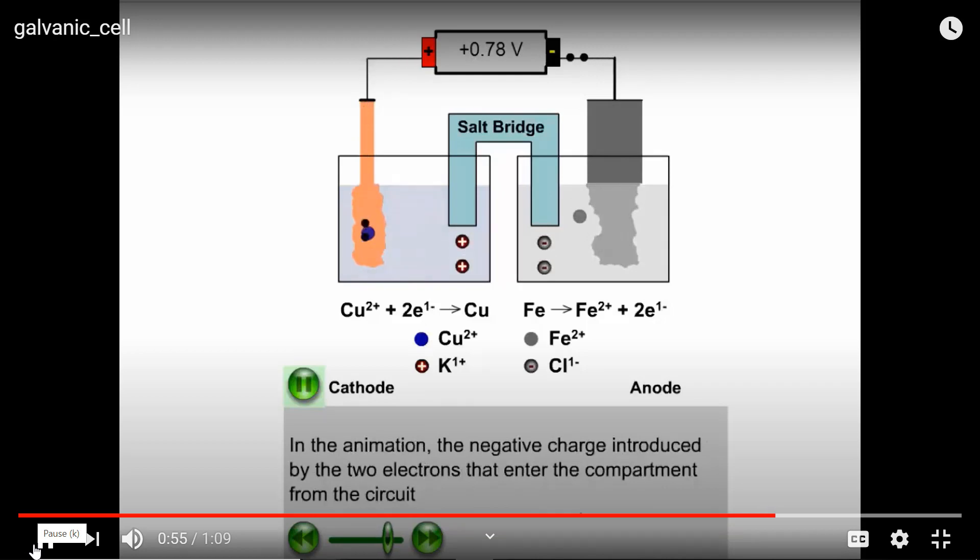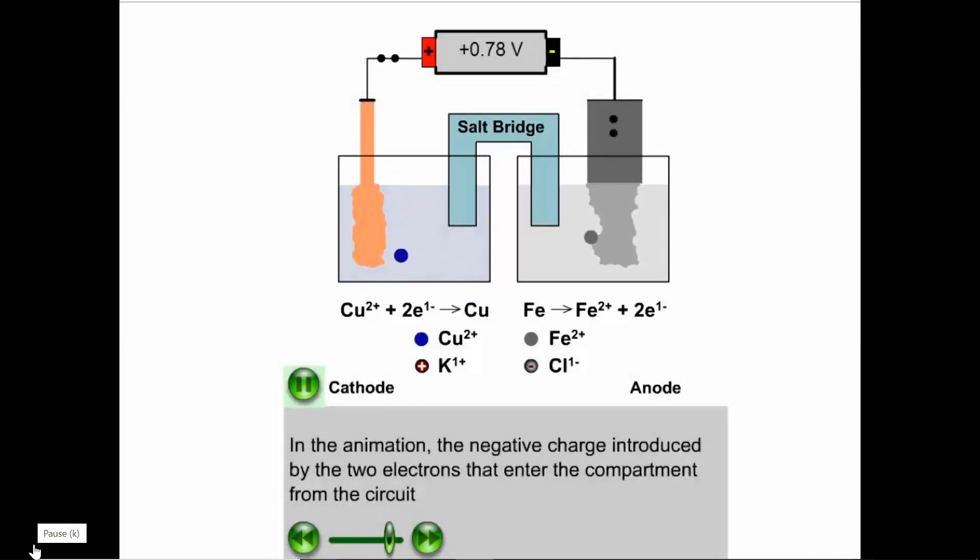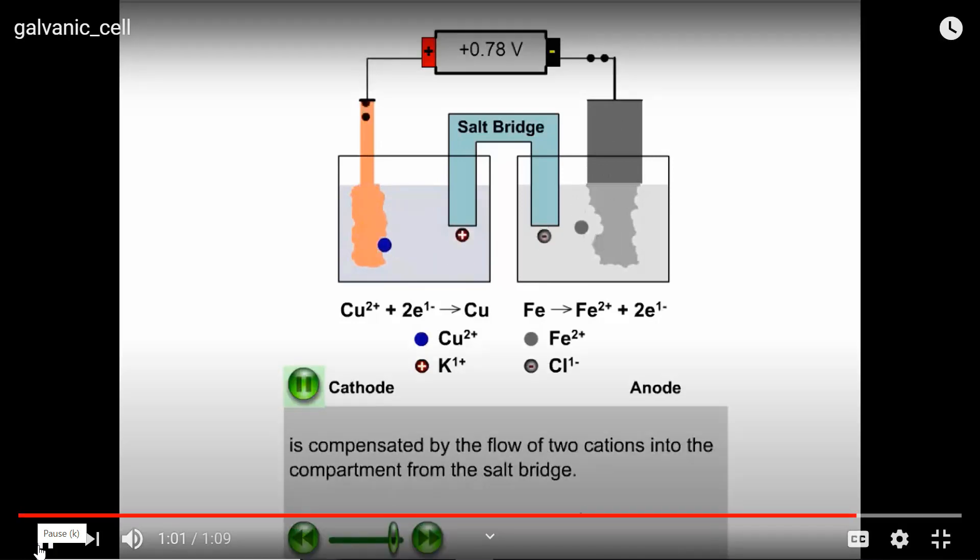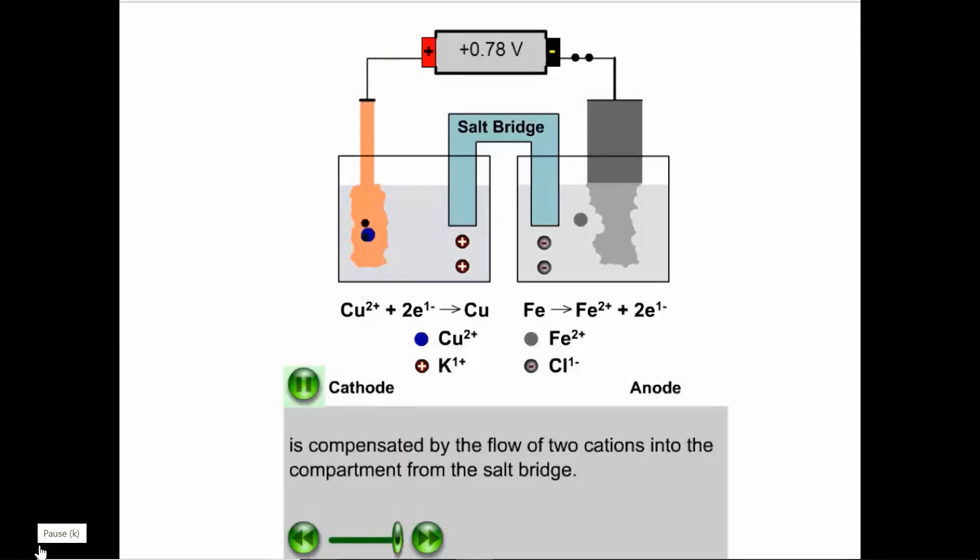In the animation, the negative charge introduced by the two electrons that enter the compartment from the circuit is compensated for by the flow of two cations into the compartment from the salt bridge.